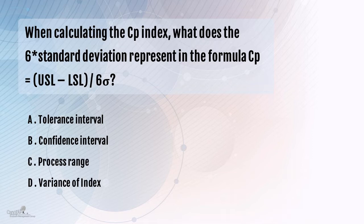We want to know what the denominator means. Let us understand what this formula is all about. On the numerator, we have USL minus LSL, which is nothing but the tolerance of the process. And what is tolerance? Tolerance is the amount of variation the customer is willing to accept.